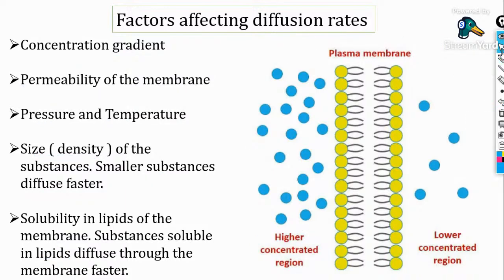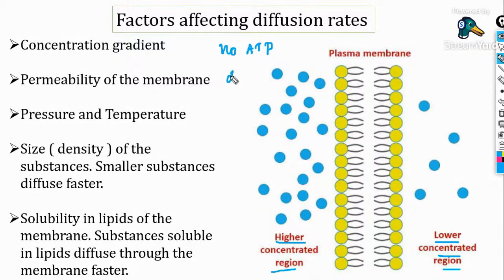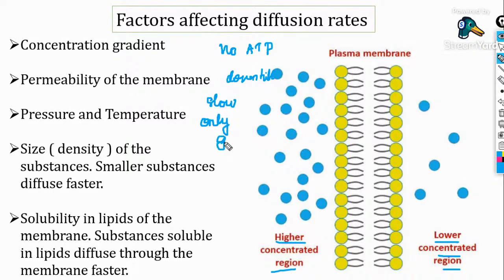Let's recap what we have learned about diffusion: it is the transport of substances from a region of higher concentration to lower concentration. No ATP or energy is required — it is a downhill process. It is a slow process, independent of a living membrane or living system. Osmosis, in contrast, is dependent on a living system — a semi-permeable membrane is required. Transpiration and other gaseous movements in plants are examples of diffusion, as it is the only gaseous movement.